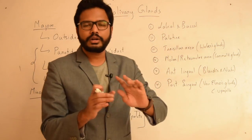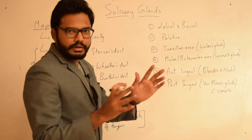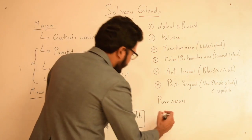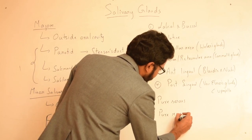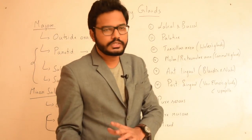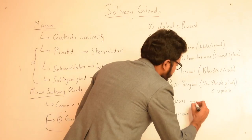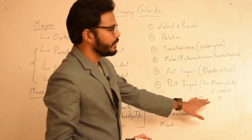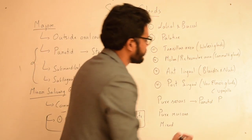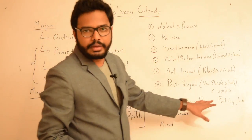Now let's discuss the nature of fluid produced by these glands. First, glands with purely serous secretion; then purely mucus; and finally mixed glands that produce both serous and mucus fluid. Glands with pure serous secretion — remember them as PP. P stands for parotid, a major salivary gland, and the other P stands for posterior lingual glands. So pure serous glands are parotid and posterior lingual.